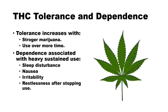THC tolerance and dependence. Tolerance increases with stronger marijuana and use over more time. Dependence is associated with heavy, sustained use. Dependence can include sleep disturbance, nausea, irritability, and restlessness after stopping use.